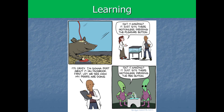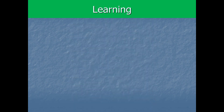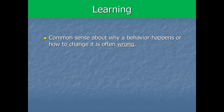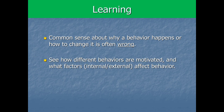So first off, why is a course on learning useful? We're going to see that common sense about why a behavior happens or how to change a behavior is often dead wrong. People do things that are counterproductive all the time and wonder why their dog, child, or spouse behaves in a way they don't want. In this course we're going to learn about behavior in a nuanced way informed by the scientific literature, generally based on basic experimental research. We'll also learn how different behaviors are motivated and what factors — both internal and external — can affect behavior.